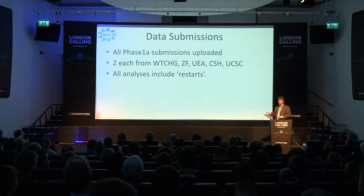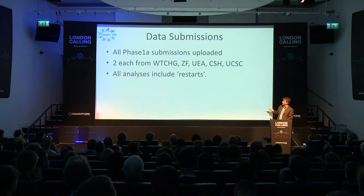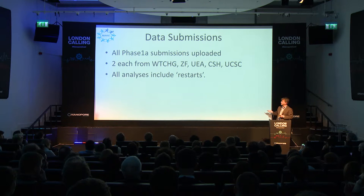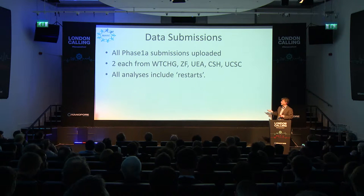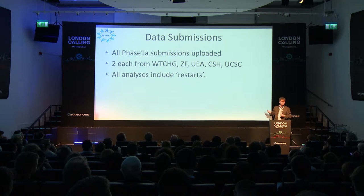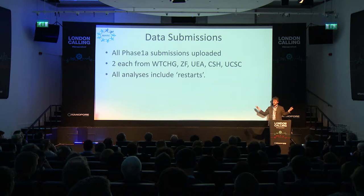Five groups worldwide have completed phase 1A, each running two different flow cells — giving us a sense of flow cell-to-flow cell variability as well as lab-to-lab variability. There are two each from the Wellcome Trust Centre for Human Genetics in Oxford, the ZF Screens Group in Belgium, UEA East Anglia, Cold Spring Harbour in Long Island, and UCSC on the West Coast. We also get a good sampling of shipping behaviour in this process.